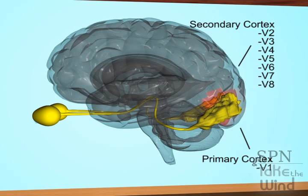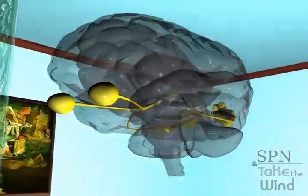The secondary visual cortex, which comprises V2, V3, V4, V5, V6, V7 and V8 regions, depends on the V1 region.